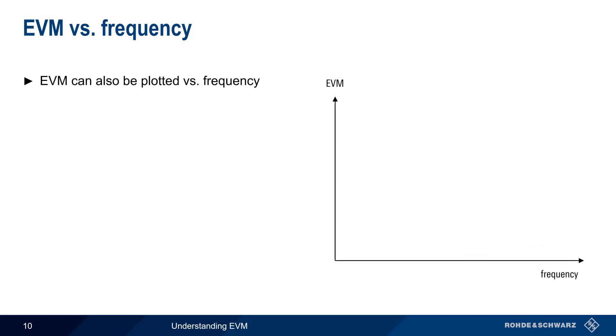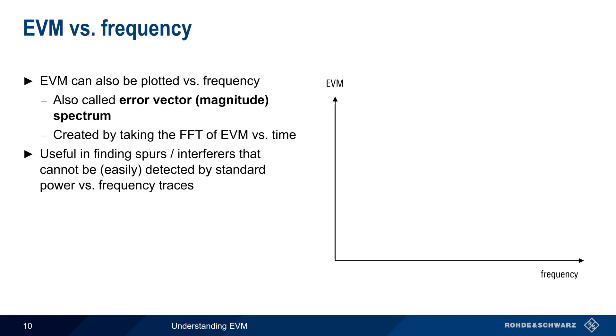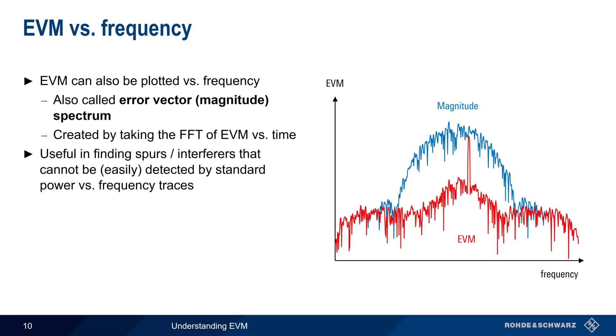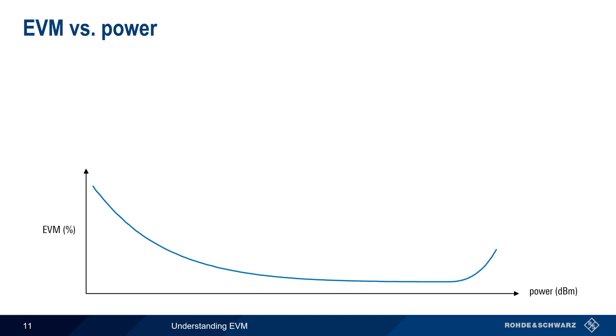Another way we can look at EVM is as a function of frequency. This is sometimes called the error vector magnitude spectrum, and is created by taking the fast Fourier transform of an EVM versus time graph, such as the one we looked at on the previous slide. One of the more useful and interesting applications of EVM versus frequency is finding in-band spurious signals or interferers. In some cases, the presence of a spurious signal may be difficult to detect when looking at the standard power versus frequency trace. For example, this magnitude versus frequency trace does not appear to contain any spurious signals, but the corresponding EVM versus frequency trace clearly shows the presence of a narrow-band spurious signal. EVM versus frequency can be used to find spurious signals because the combination of the desired and undesired signal will cause increased EVM only at or near the frequency of the spurious signal.